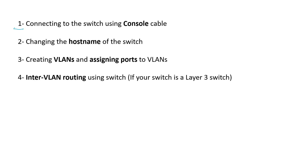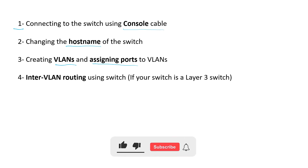First we want to connect to a switch using a console cable — I'm going to show you what a console cable is. Then you are going to change the host name of the switch, which is the name of the switch. And then we want to create some VLANs to separate computers from each other logically, and also assign some ports of the switch to the VLANs. I will explain more about VLANs in the next slide.